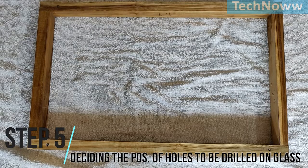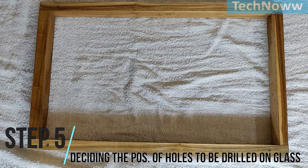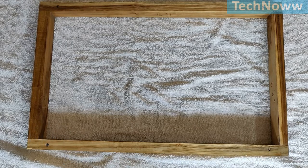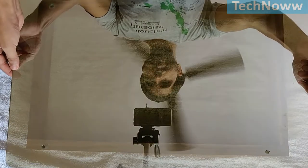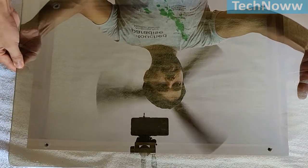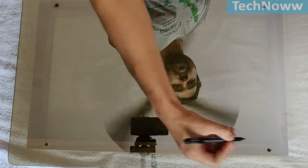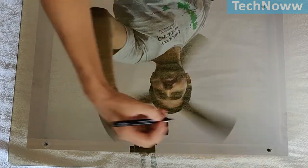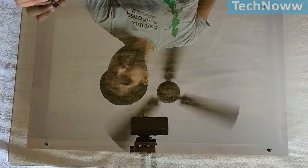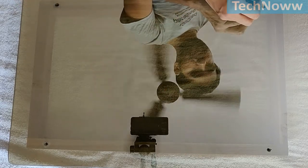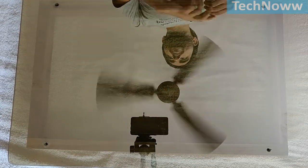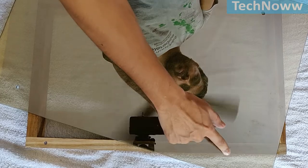Step 5: Deciding the position of holes to be drilled on the mirror glass. Firstly, we need to mark the points on the mirror glass for drilling. We will place the mirror on the frame and mark the points on the mirror. Keep in mind that the mark points should be in the center of the frame assembly and only on the side locks of the frame. Drill mark points on the mirror.